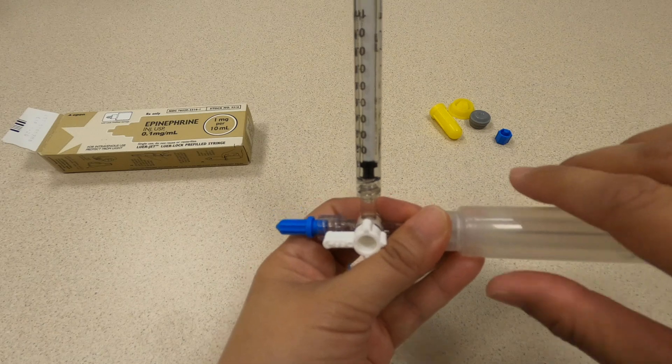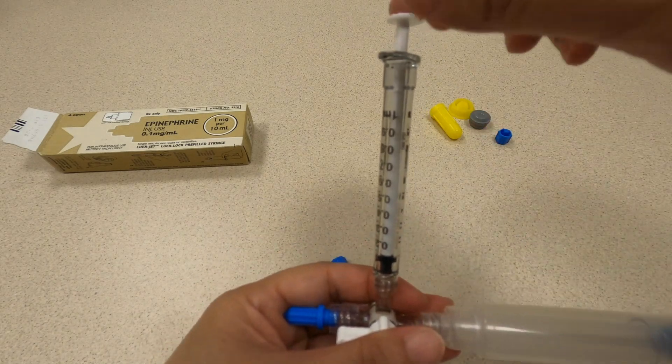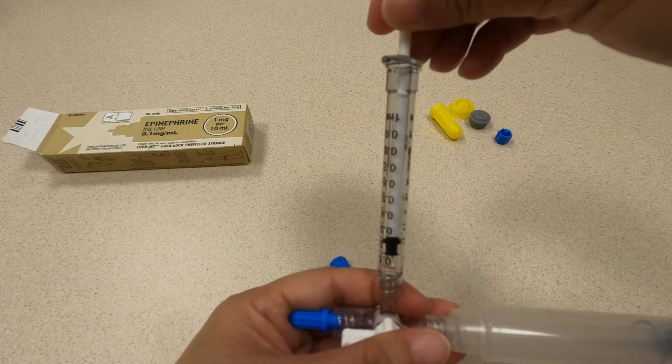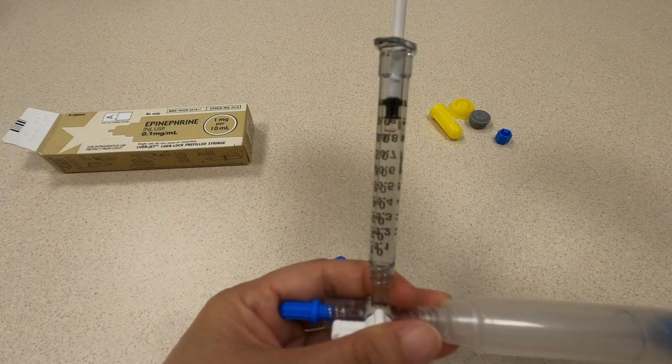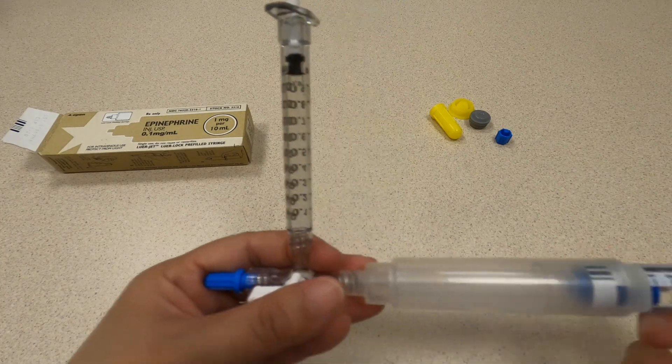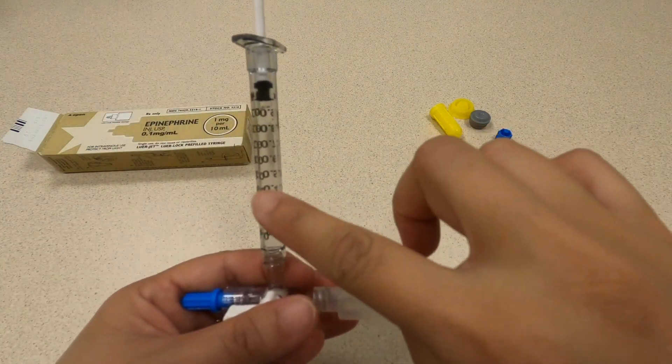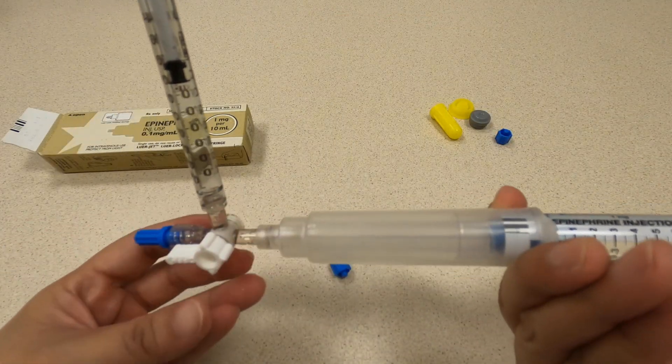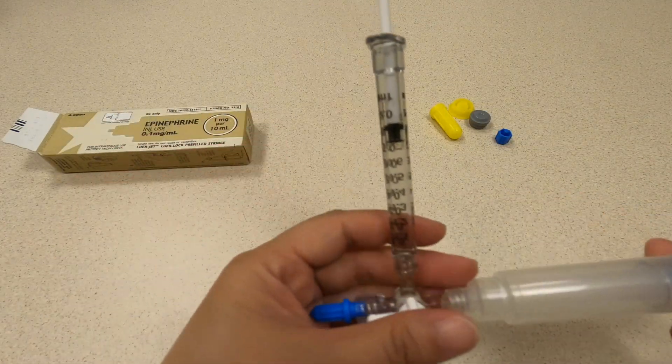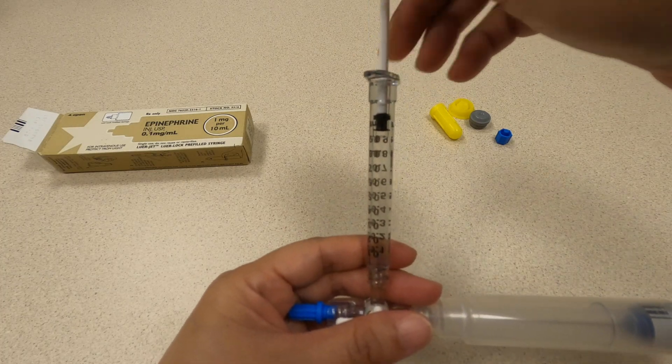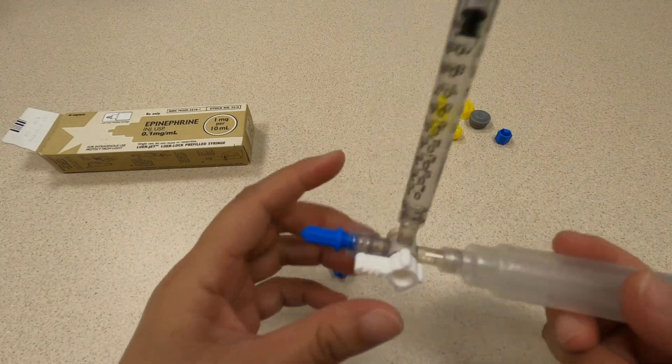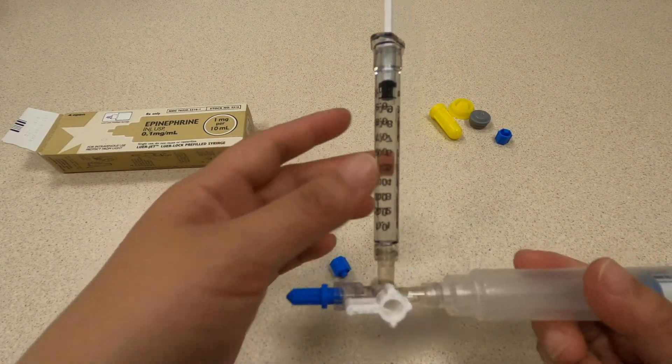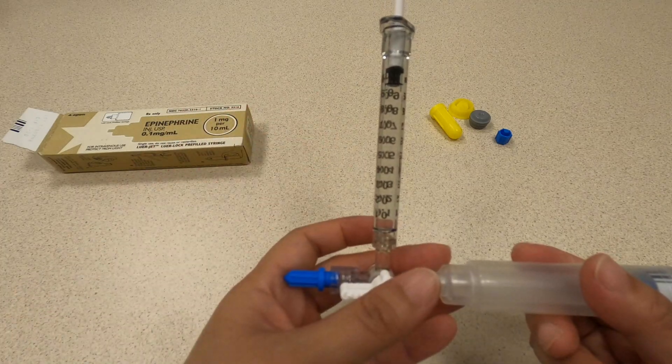After you've primed your stopcock with epi, you're going to go ahead and pull up on this syringe to get your dose. There you go. If you push on this side to try to fill the syringe, what you'll find is that it will not really go. It doesn't really go very easily, but it goes very easily if you draw up on this syringe. Now you have your dose of epi. You can pop this off and give it to the patient.